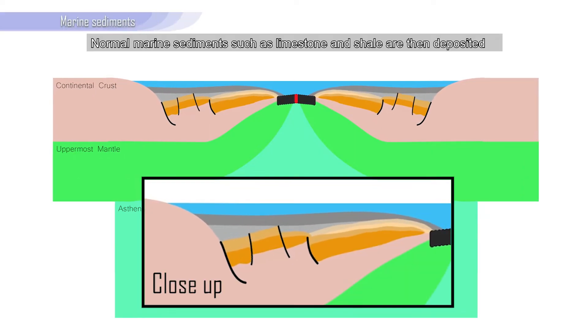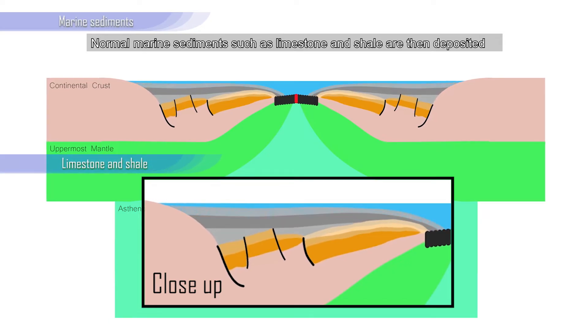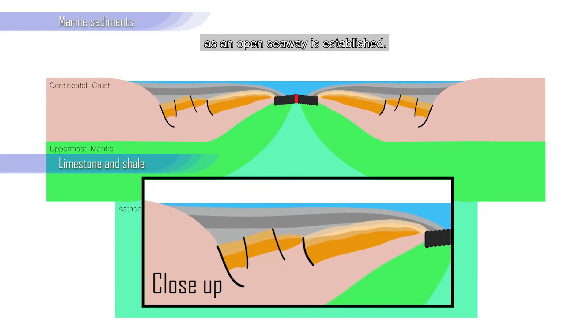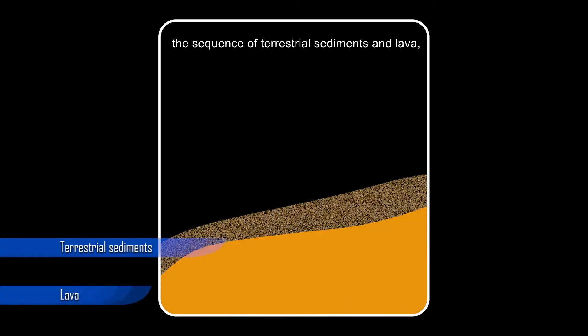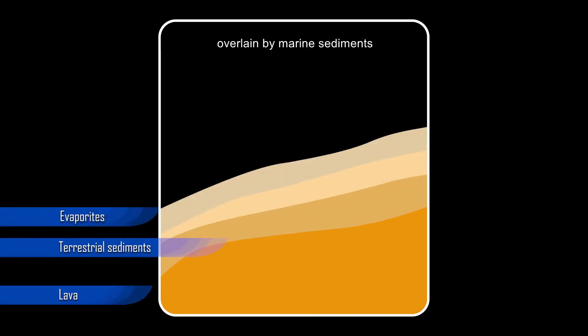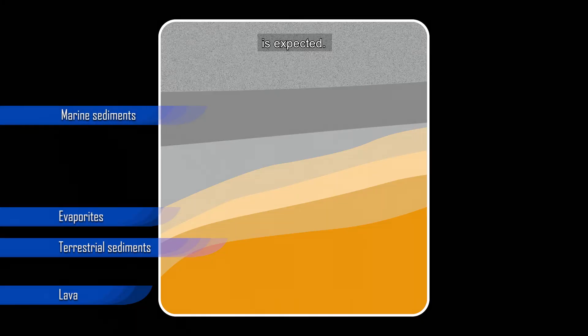Normal marine sediments such as limestone and shale are then deposited as an open seaway is established. Thus, in the evolution of a continental rift widening into an ocean, the sequence of terrestrial sediments and lava, overlain by evaporites, overlain by marine sediments, is expected.